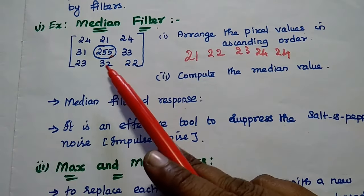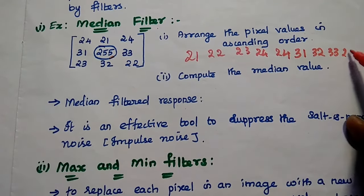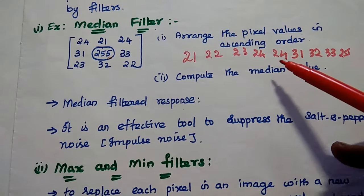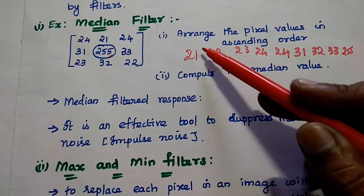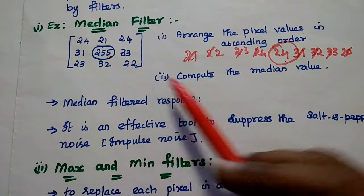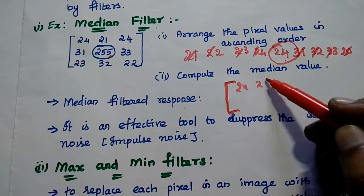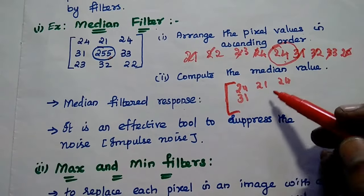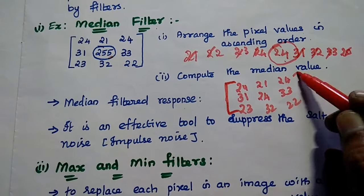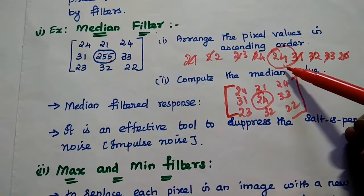Continuing in ascending order: 31, 32, 33, and the largest value is 255. So in these 9 pixel values, we take the median value. With 9 values, we ignore the first and last 4 values and take 24 as the mid value. We then replace the given segment with this median value — so the pixel 255 is replaced with 24. We have replaced the pixel value with the median value of the segment, which is why it is called non-linear.